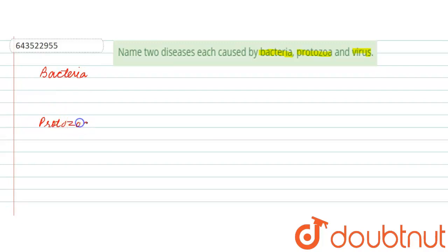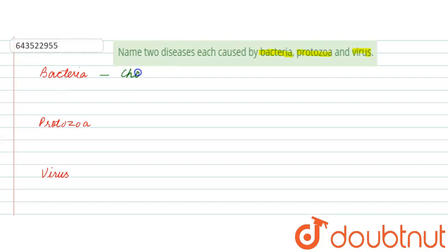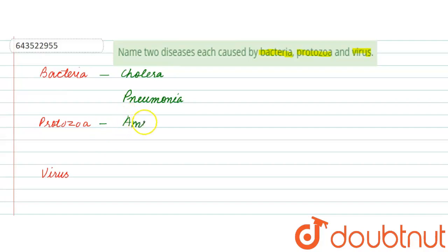We will write bacteria, then protozoa, and then virus, and in front of each we will write the name of the diseases. Starting with bacterial diseases: the first one is cholera — cholera is a bacterial disease — and the second one is pneumonia, which is also caused by bacteria. Now moving towards protozoan diseases, the first disease we will mention is amoebiasis.